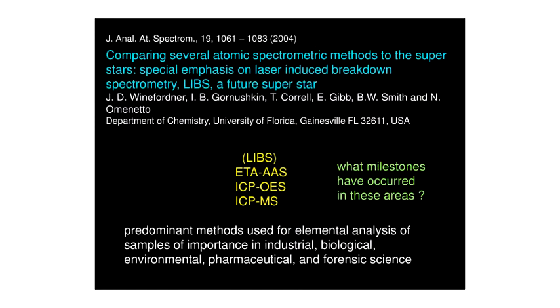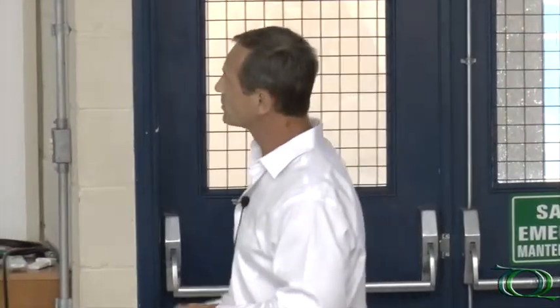In 2004, Jim Weinfordner presented a paper at the Florida Winter Conference where he compared several common popular atomic spectroscopic methods — which he termed the superstars in this area — to other methodologies, in particular laser induced breakdown, which wasn't tremendously popular back in 2004. He isolated three techniques: electrothermal atomization or graphite furnace atomic absorption, Inductively Coupled Plasma optical emission, and mass spectrometry, because they were the predominant methods used throughout the world. He liked to compare LIBS to those. In the intervening years LIBS has matured, but what are the milestones in all these areas?